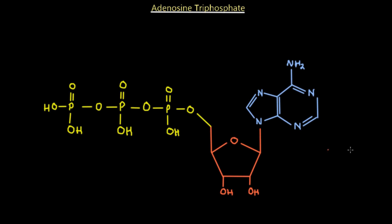Here is the ATP molecule. Starting from the right side, this is a nitrogenous base which is adenine. Adenine comes from the name adenosine, which is a nucleoside — that's the adenine nitrogenous base plus the five-carbon sugar. Nucleotides, as discussed previously, consist of a nitrogenous base — adenine, guanine, cytosine, thymine, or uracil — attached to a five-carbon sugar. Adenine has two rings, making it a purine, and it is attached to a five-carbon sugar and one single phosphate, which makes up a nucleotide.